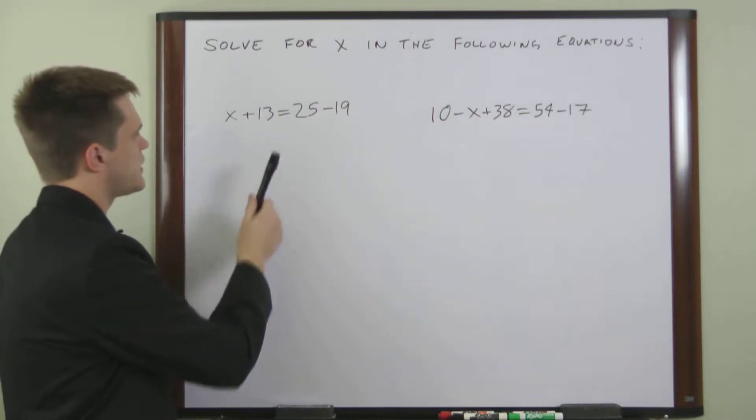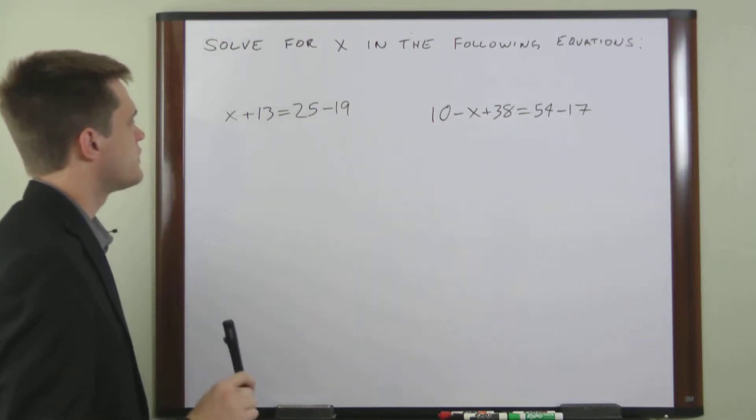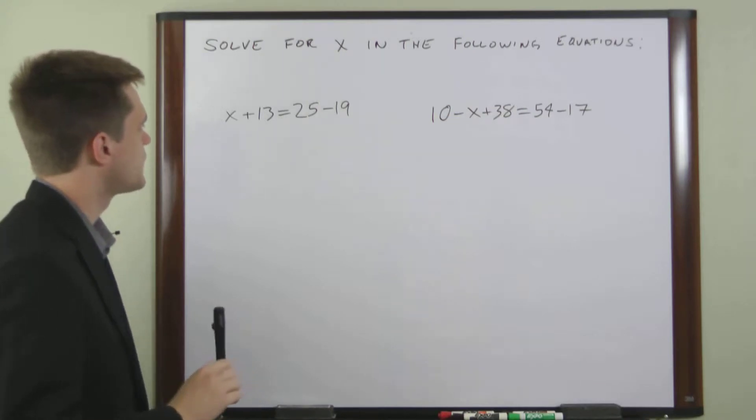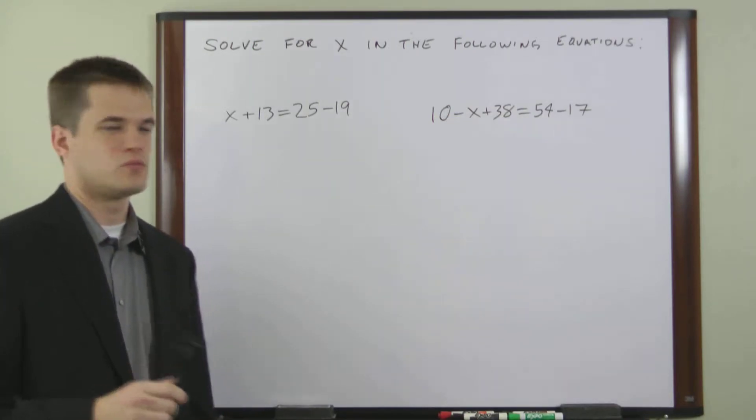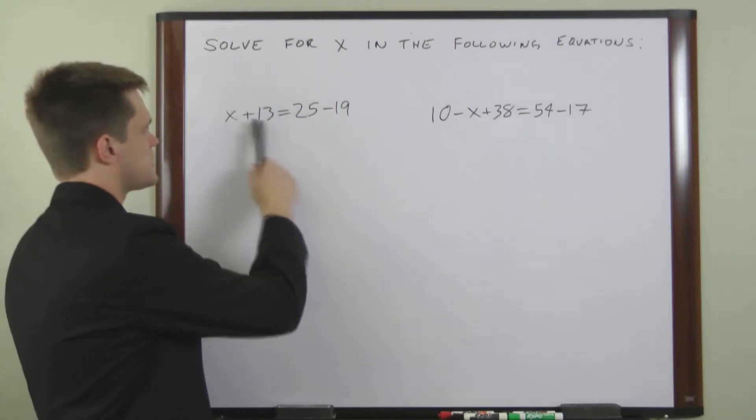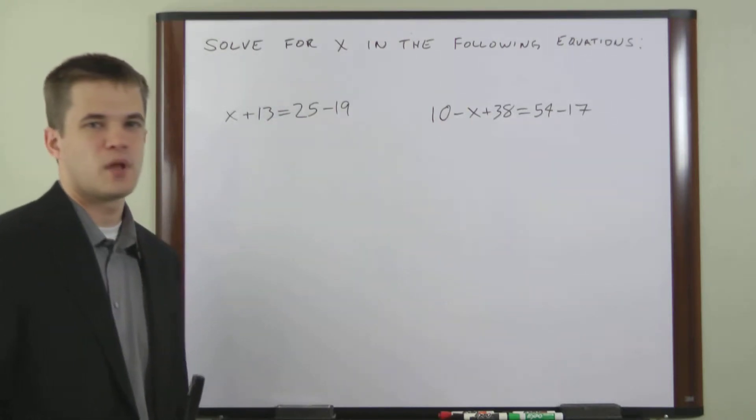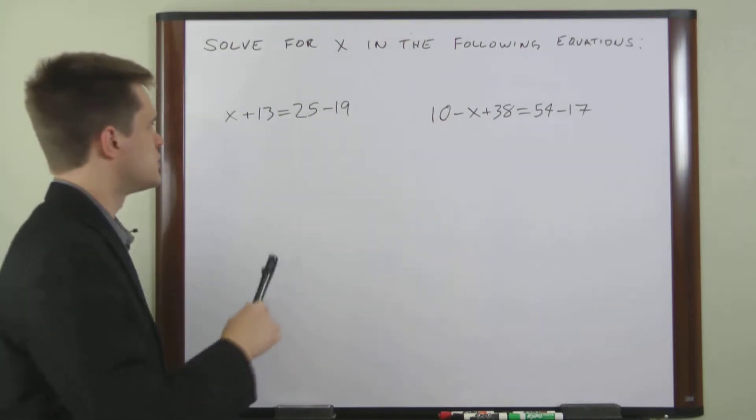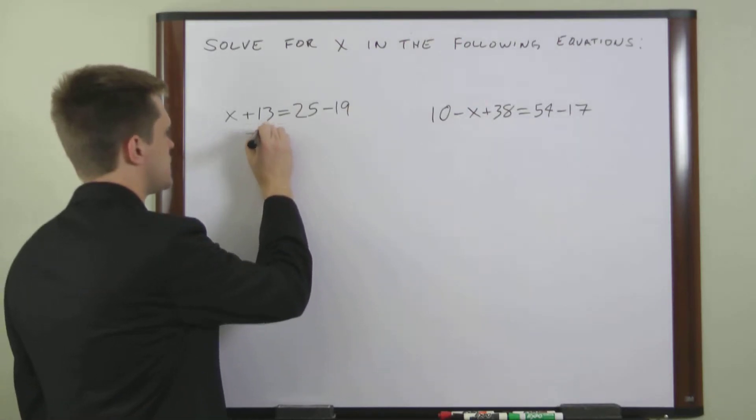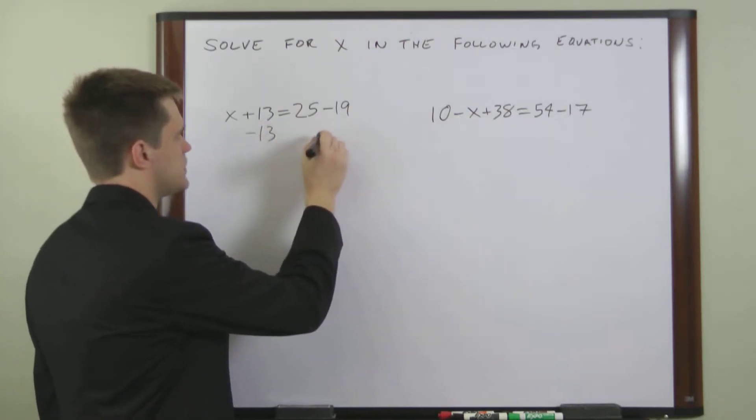In this first one, we have x plus 13 equals 25 minus 19. So to isolate x, we need to get this 13 to the other side of the equation. To do that, we need to subtract 13 from both sides of the equation.